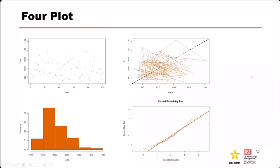A four-plot is a standard way to show four plots on one visual to make lots of inferences about data simultaneously. The four plots typically used are: the run sequence plot (for trends over time), the lag plot (to check whether data is independent), the histogram (for a quick visual on typical value, uncertainty magnitude, and symmetry), and the quantile-quantile plot (to assess whether the data might fit a particular distribution — which helps with selecting a model or distribution to use in a risk analysis).